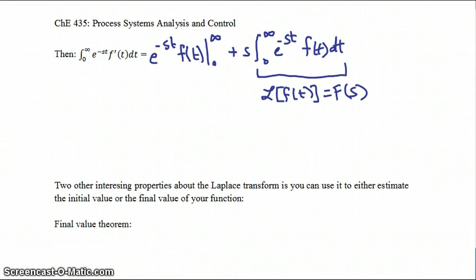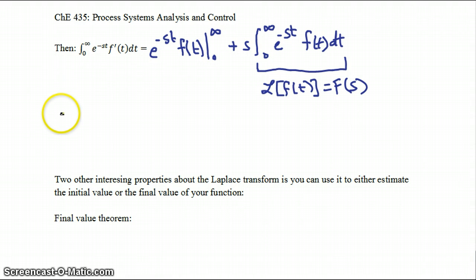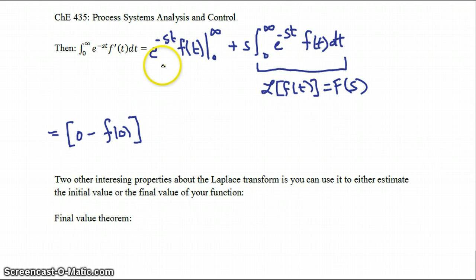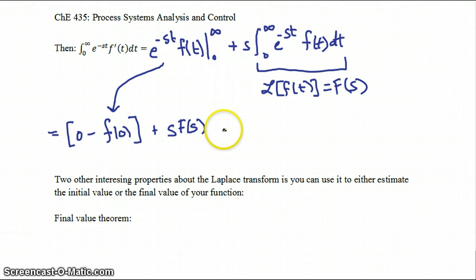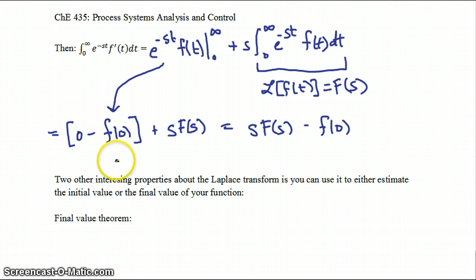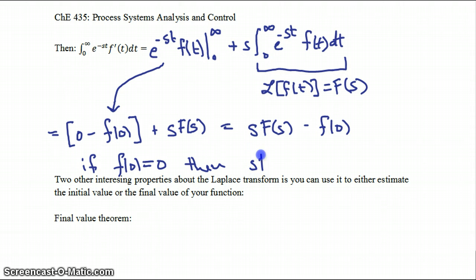Evaluating the first part gives the quantity 0 minus f(0), and the second term is plus s times F(s). More succinctly, this is s times F(s) minus f(0). If f(0) equals 0, then you're left with simply s times F(s).